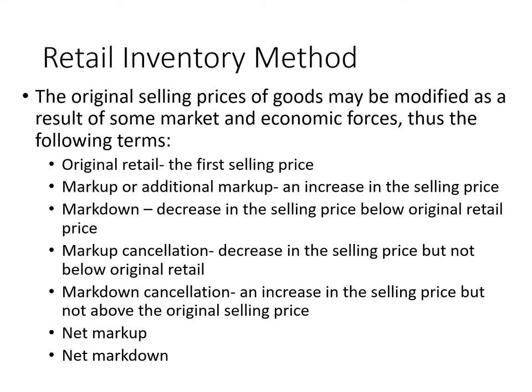The original selling price is computed based on the cost per unit multiplied by the target profit. For example, if cost per unit is 100 and target profit is 40%, the original selling price is 140. From time to time, you may raise or lower this price.